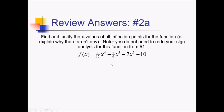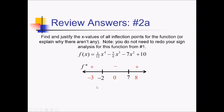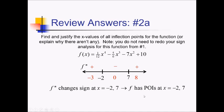On this problem, we're trying to find and justify values of inflection points for the function from number 1, part a. To be an inflection point, the point needs to exist on the function — since this is a polynomial, any point exists. We also need a sign change in f double prime. We already did sign analysis for this function, and f double prime is changing signs at x equals negative 2 and also positive 7. This tells us that f has points of inflection at x equals negative 2 and positive 7.